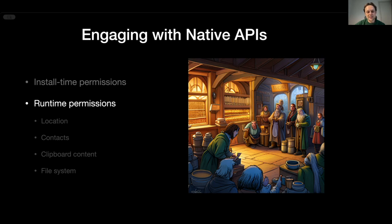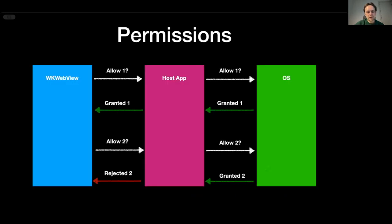Permission behavior varies very dramatically between different iOS versions, so I don't want to delve into specific cases. Instead, I want to emphasize some general principles. If your web content needs permission to use some system API, it should first ask the host application, then the host application asks the actual operating system. For some APIs on newer iOS versions this process can be simplified — for instance, if you already have a permission to use the camera in the host app, the camera can be used in the integrated web view without a pop-up.